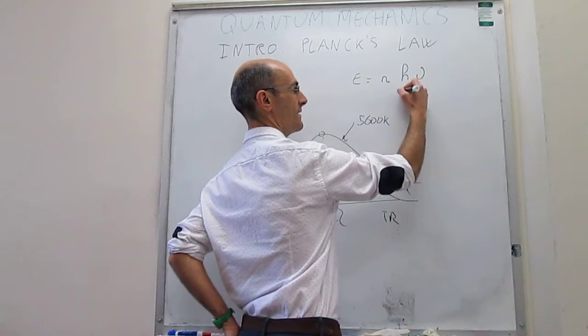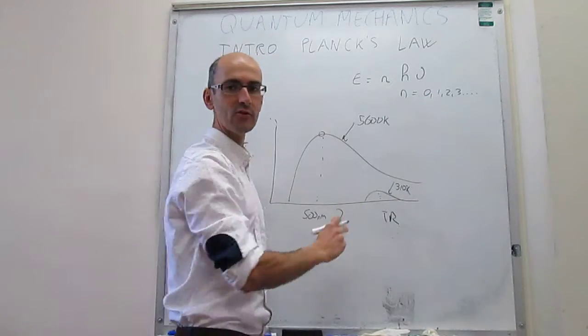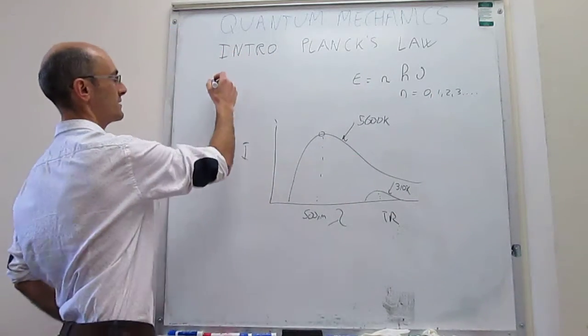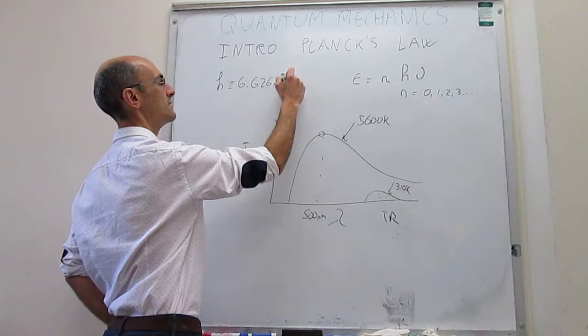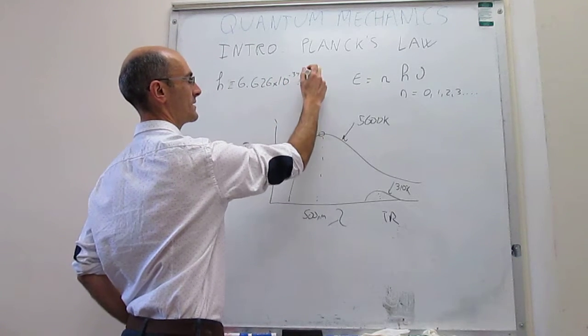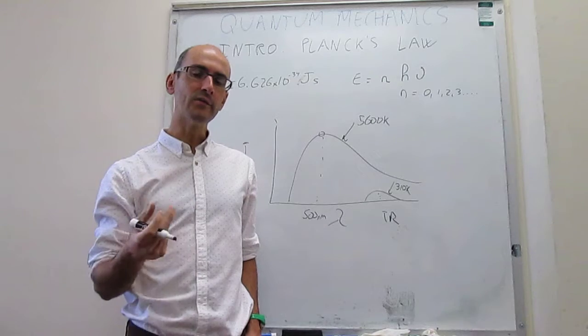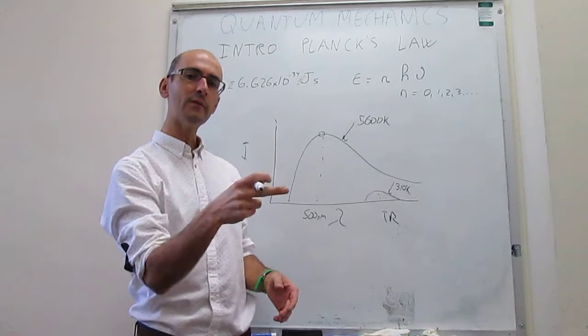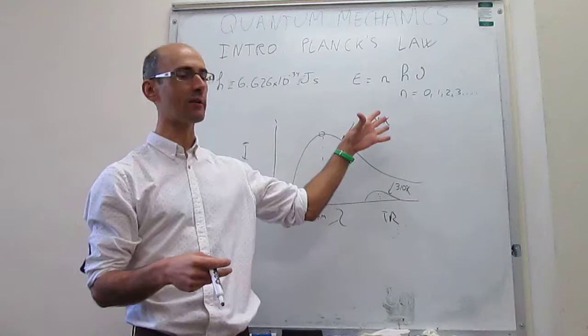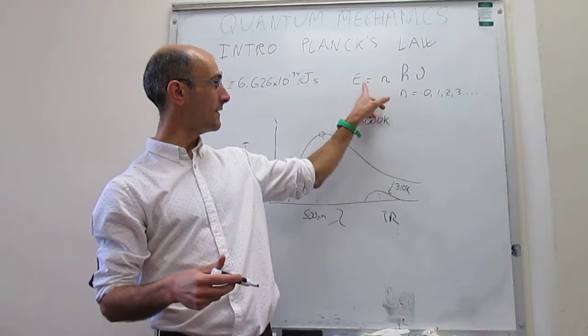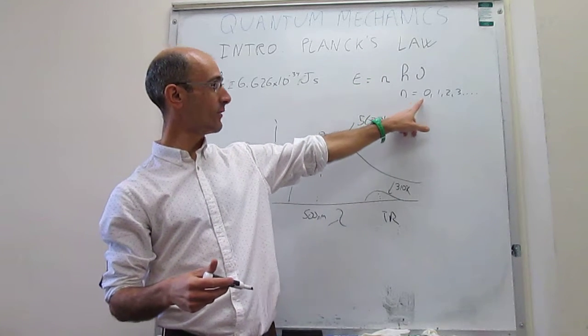But the key here is that this n number has to be an integer, and it cannot be a real number. h is simply a constant, which is what we call Planck's constant, 6.626 times 10 to the minus 34 joules times second. But the very important aspect of this is that when we think about energy in the classical term, when we think about that baseball, the energy of the baseball can have any value of energy that we wish. But that's not the case for this electromagnetic radiation emitted from an object. It turns out that the energy of that emitted electromagnetic radiation can only have very specific values.